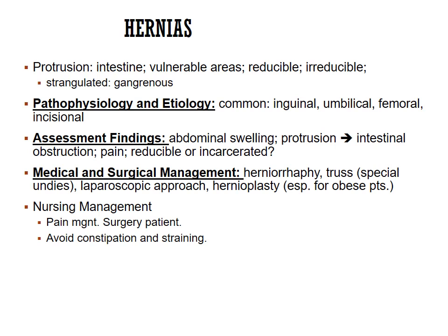Inguinal hernias are the most common, but hernias can also be umbilical, femoral, or through an incision. Assessment findings include abdominal swelling, protrusion, and potentially intestinal obstruction. The hernia can cause a bowel obstruction if it clamps off the intestines.